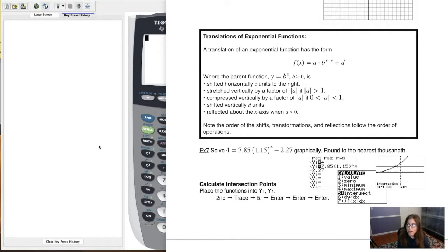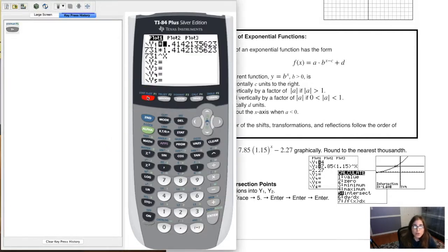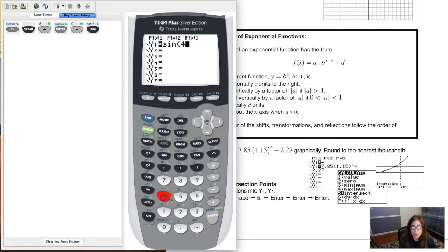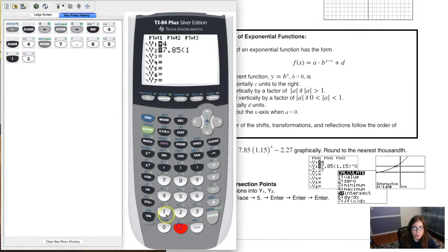So let's go through the calculator side of this. Go to my y equals. It looks like I had a plot on, let me clear that out. I had a regression model in there, so I turned all of my stuff off. Let's put the left side of the equation, which was 4, into y1. And the right side of my equation was 7.85 times 1.15 raised to the x power, and then I'm going to subtract 2.27.